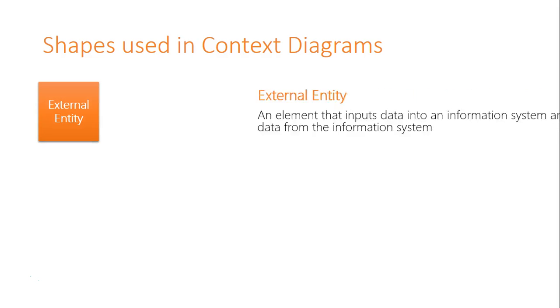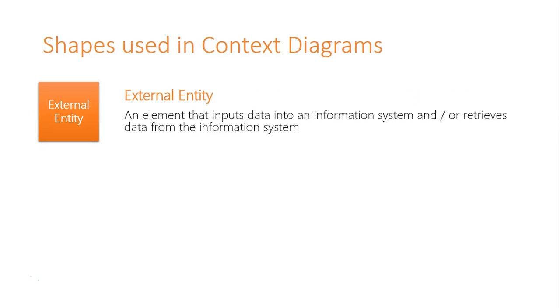So what we have first is an external entity. And this is basically any element that either inputs into the system or receives information from the system. It could be a person such as a customer or it could even be a product with a barcode that gets scanned and then inputs data into the system. So it's basically where we're gathering information from and in the end where it's going to end up.